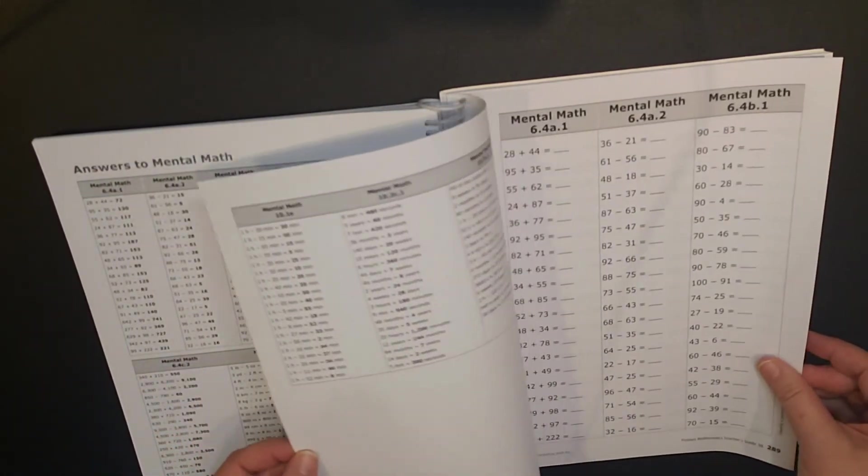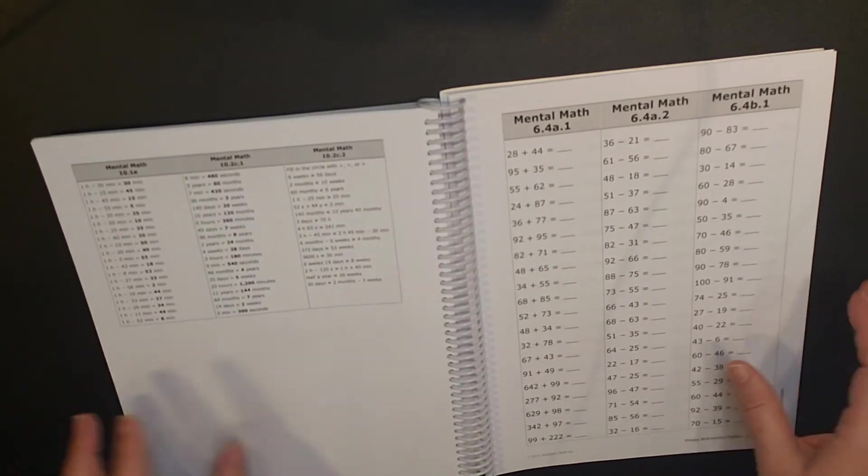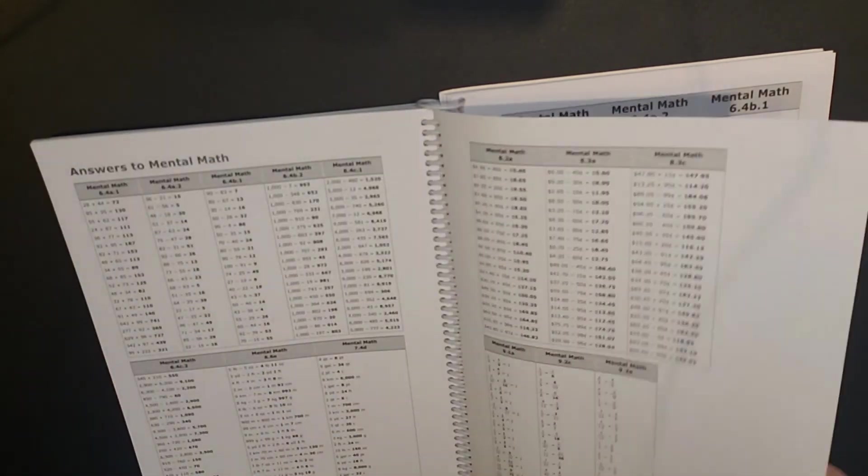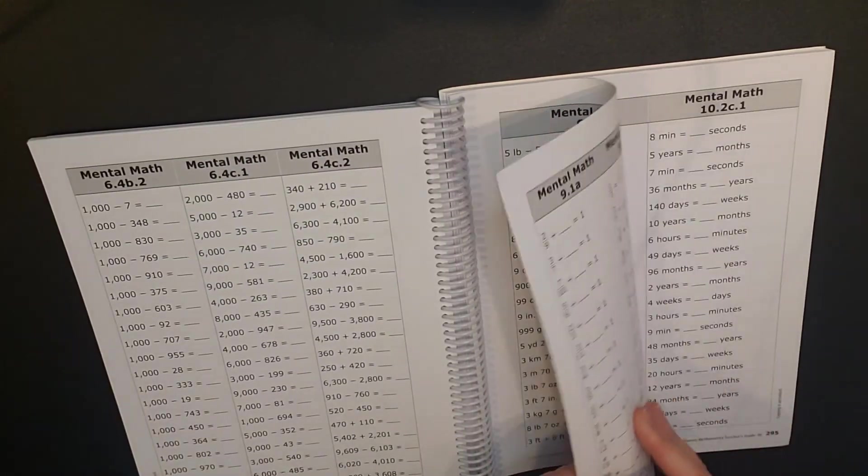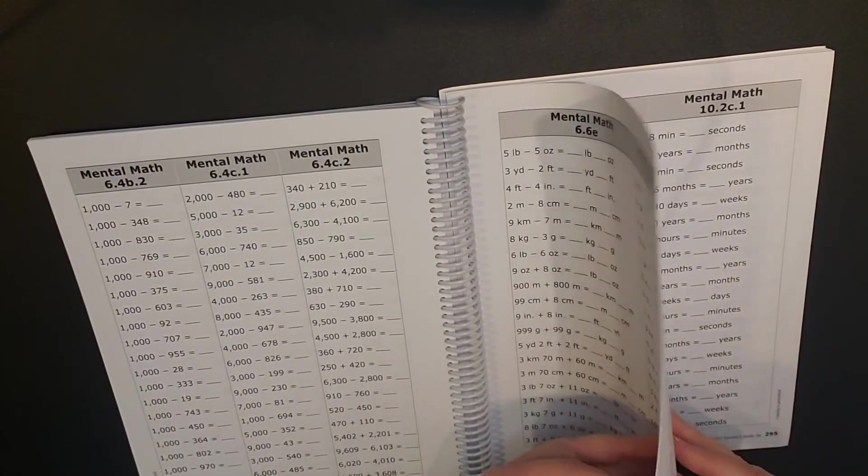So for example, if I look at lesson 6.4c, they have the objective, but then they also list two mental math exercises to complete. In the back are the answers to the mental math. So here would be your answer to mental math 6.4c1. So that is really nice to have those answers. And then you can see here are the worksheets, and then you have here your answers.